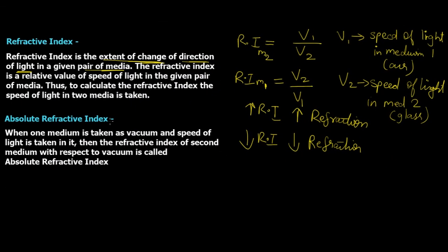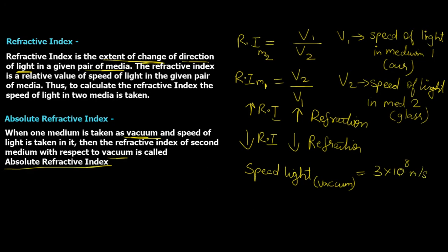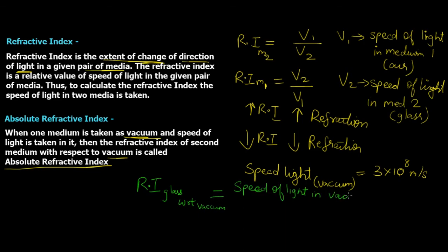Now let's look at absolute refractive index. When one medium is taken as vacuum, the refractive index of the second medium with respect to vacuum is called the absolute refractive index. The speed of light in vacuum is the highest, at 3 × 10⁸ m/s. The absolute refractive index of glass equals speed of light in vacuum divided by speed of light in glass, and similarly for air.